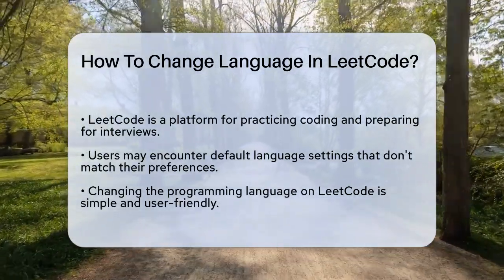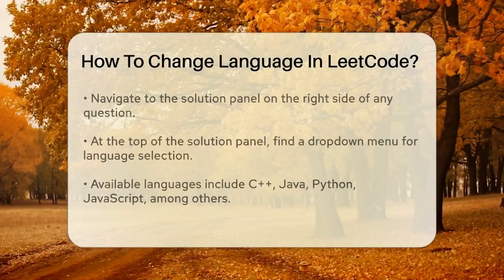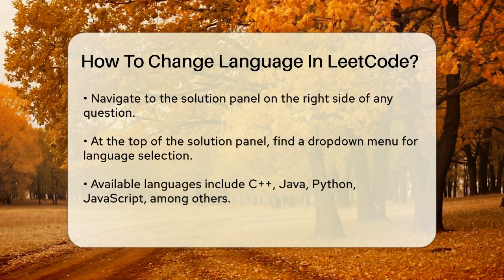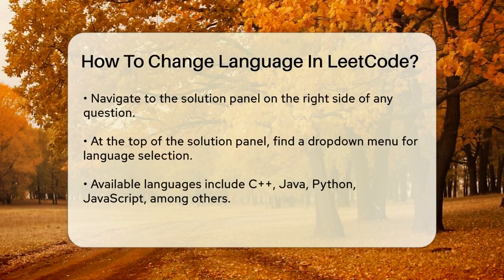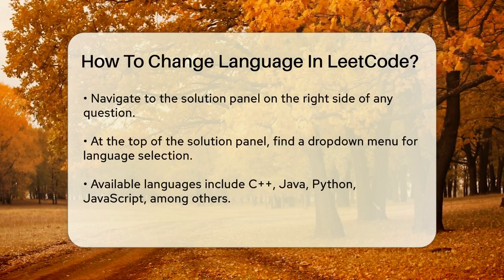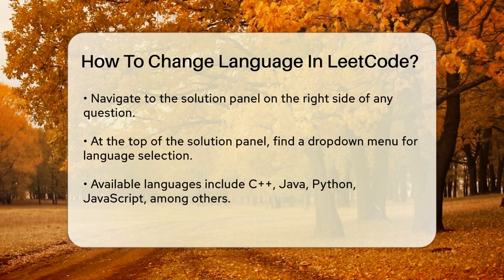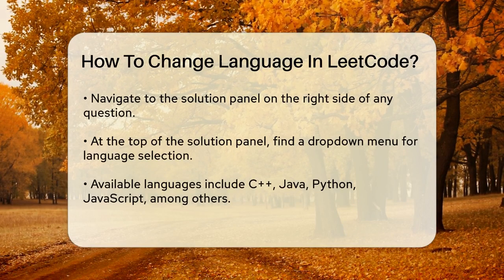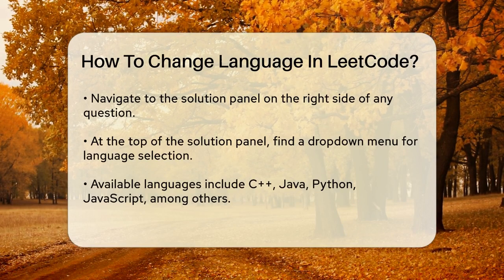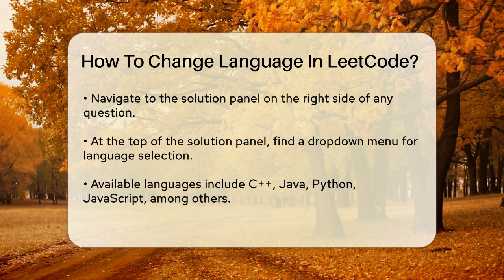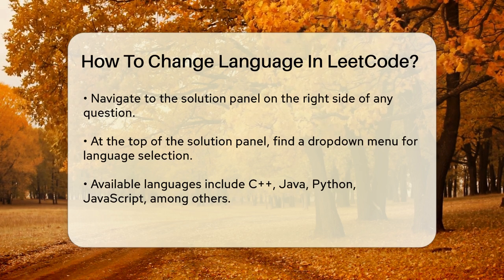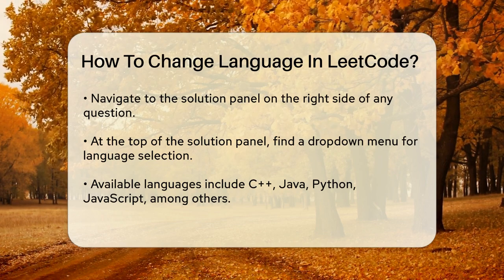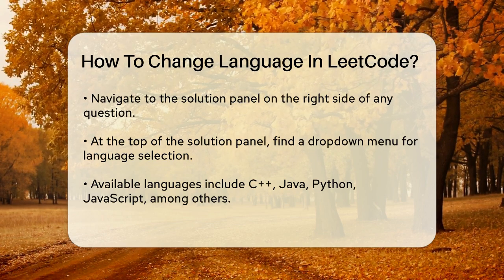Whether you're switching from Python to Java, C++ to JavaScript, or any other combination, LeetCode makes it easy. To change the language, you need to navigate to the Solution panel. When you open any question on LeetCode, you'll see a Solution panel on the right side. At the top of this panel, there's a small drop-down menu. This is where you can select your preferred programming language. You can choose from a variety of languages such as C++, Java, Python, JavaScript, and many more.